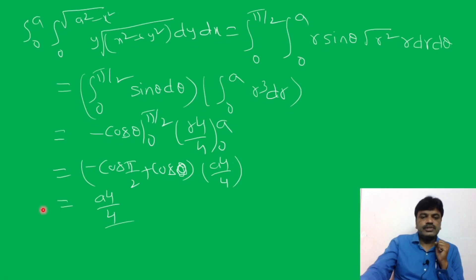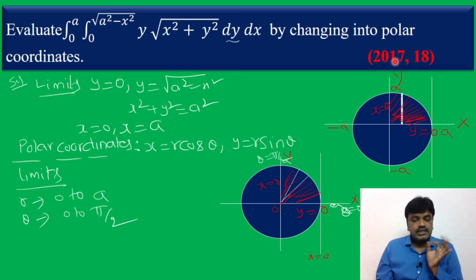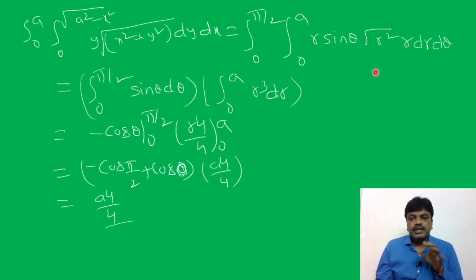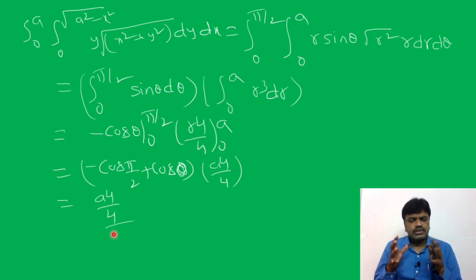The value of the given problem is a⁴/4. This was the 2017–18 exam problem, very important. The steps were: identify the region, write polar coordinates, find limits for r and θ, substitute, observe that θ and r separate, integrate separately, and get a⁴/4. If you have any doubt, please comment in the comment box. Hope you understand. Thank you for watching this video.